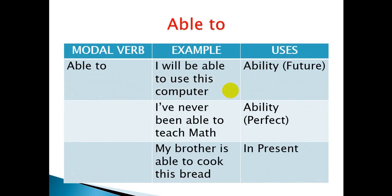Another phrase is 'be able to.' You can use it for ability in the future and in the perfect. For future ability: 'I will be able to use this computer.' For present ability: 'I am able to use this computer.' This is the same meaning as 'can' — for example, 'I can speak English' becomes 'I am able to speak English.'